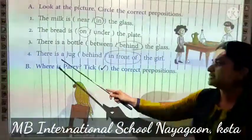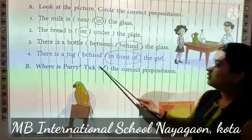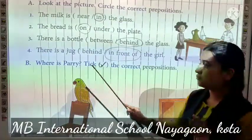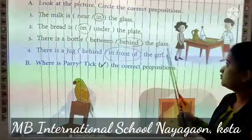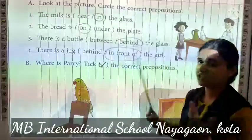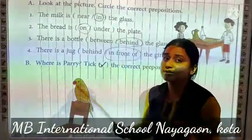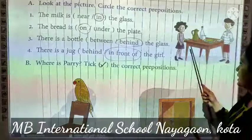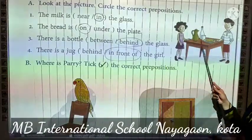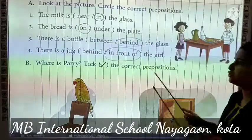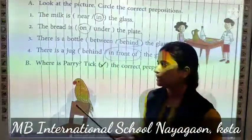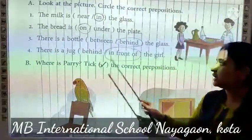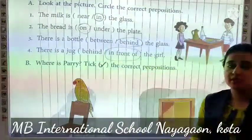Now fourth one is, there is a jug dash the girl. Aapko bata rhe hai — behind ya in front of. Behind means piche, in front of means saamne. Toh picture mein woh saamne hai, toh haam in front of ka use karenghe. There is a jug in front of the girl.